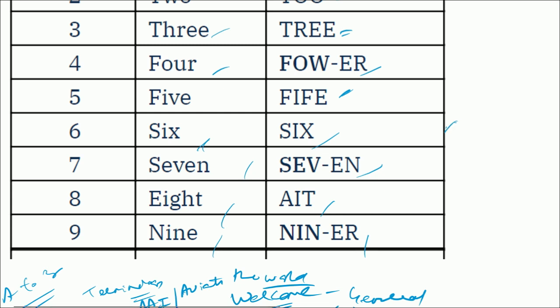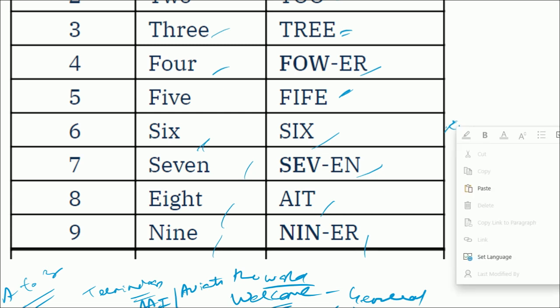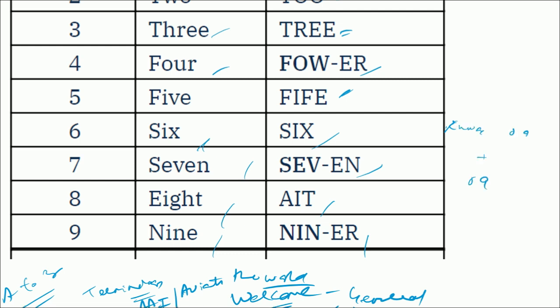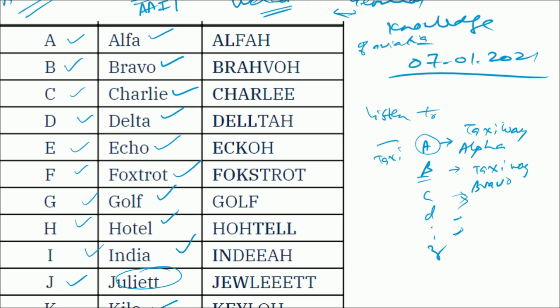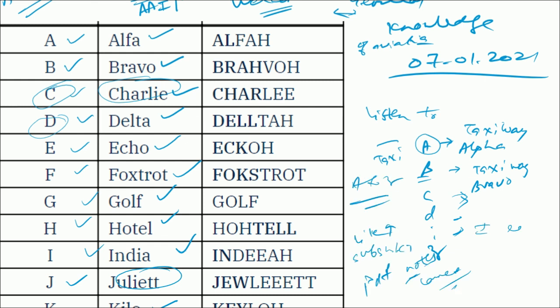For example, if you want to call runway 09, you would say 'runway zero niner.' In an exam, they may ask how alphabet C is pronounced in aviation — the answer is 'Charlie.' Likewise Delta and so on.